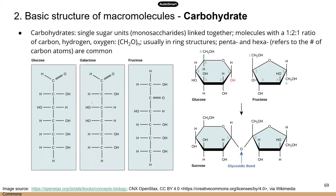The second objective is the basic structure. For carbohydrates, there is this signature 1 to 2 to 1 carbon, hydrogen, and oxygen ratio. For carbohydrates, there are no other elements — you only have carbon, hydrogen, and oxygen, and that's it.